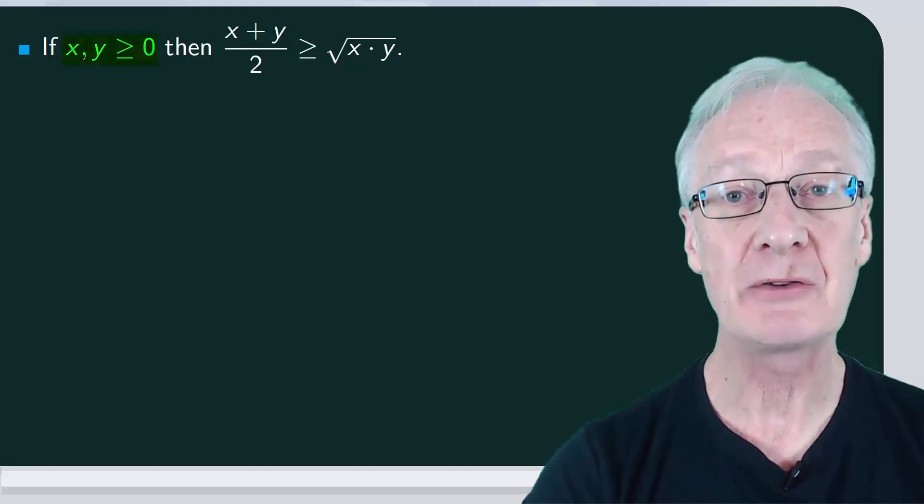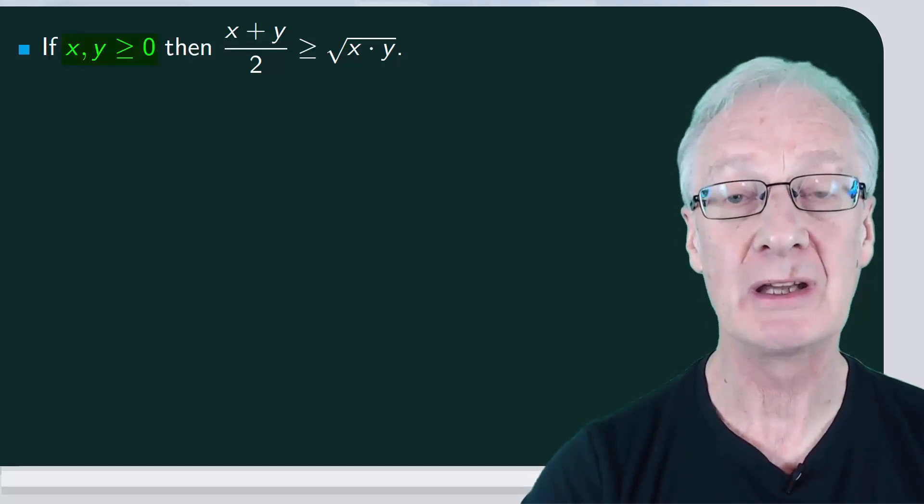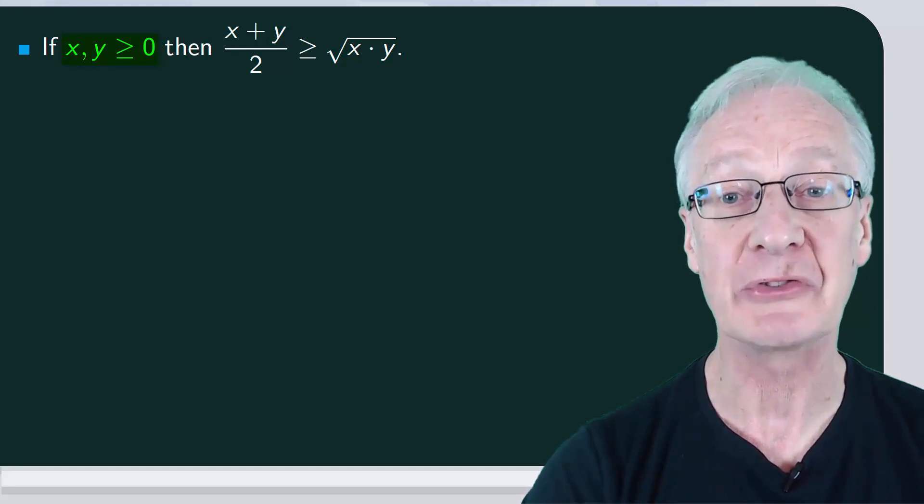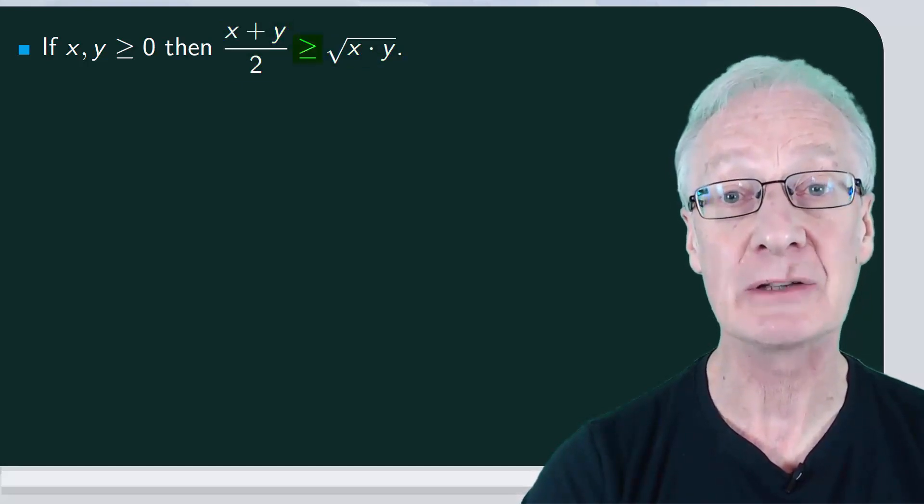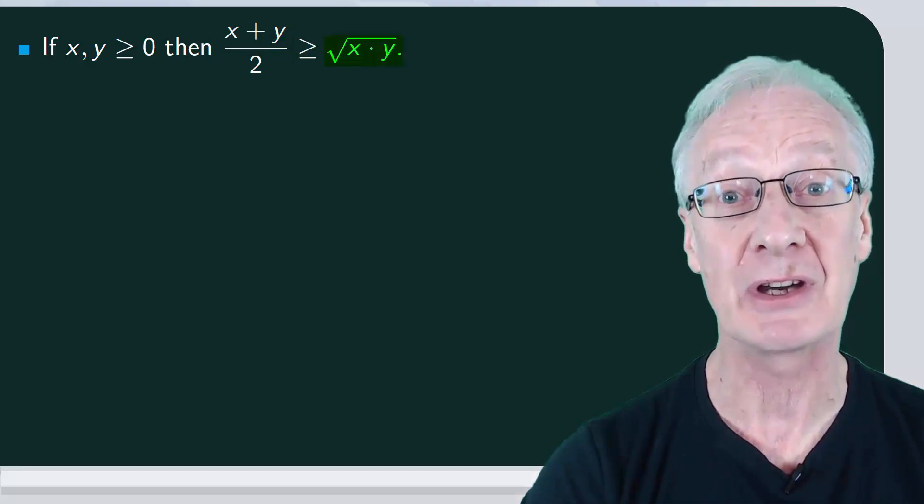We'll show that for any pair of real numbers x and y which are greater than or equal to zero, their arithmetic mean is greater than their geometric mean. That is, x plus y divided by 2 is greater than or equal to the square root of x times y.